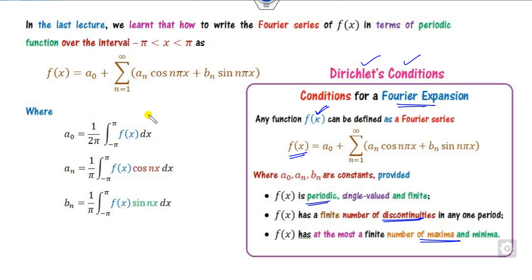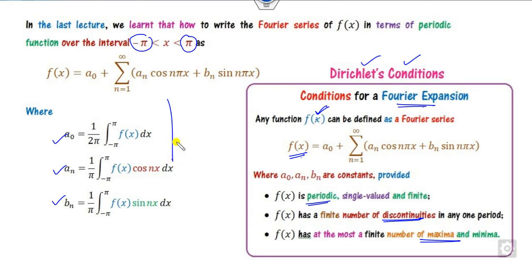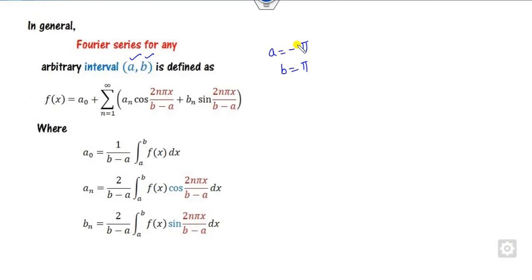The formulas for a0, an, and bn are given in terms of the interval from minus pi to plus pi. In general, you can write them in terms of a and b. If you substitute a as minus pi and b as plus pi, the formulas reduce to the standard form. If you want the Fourier series between 0 and 3, you take a as 0 and b as 3.